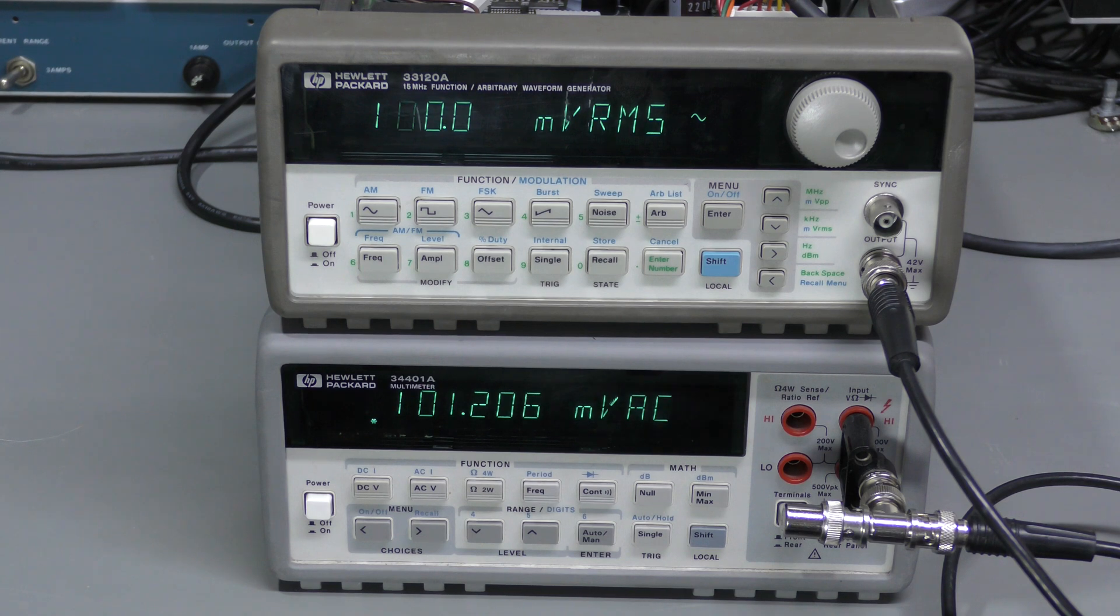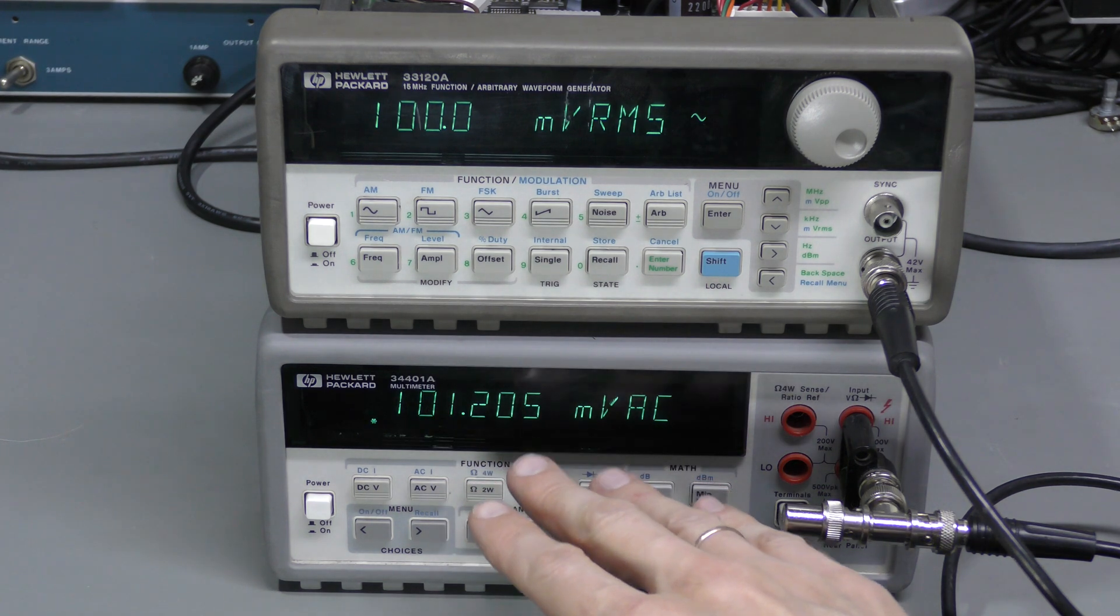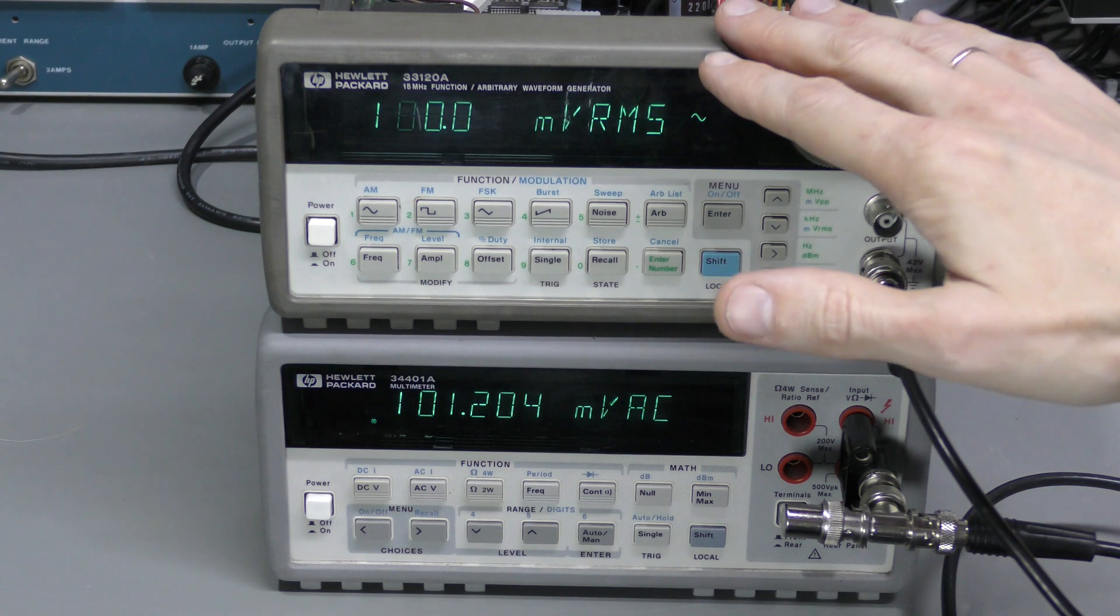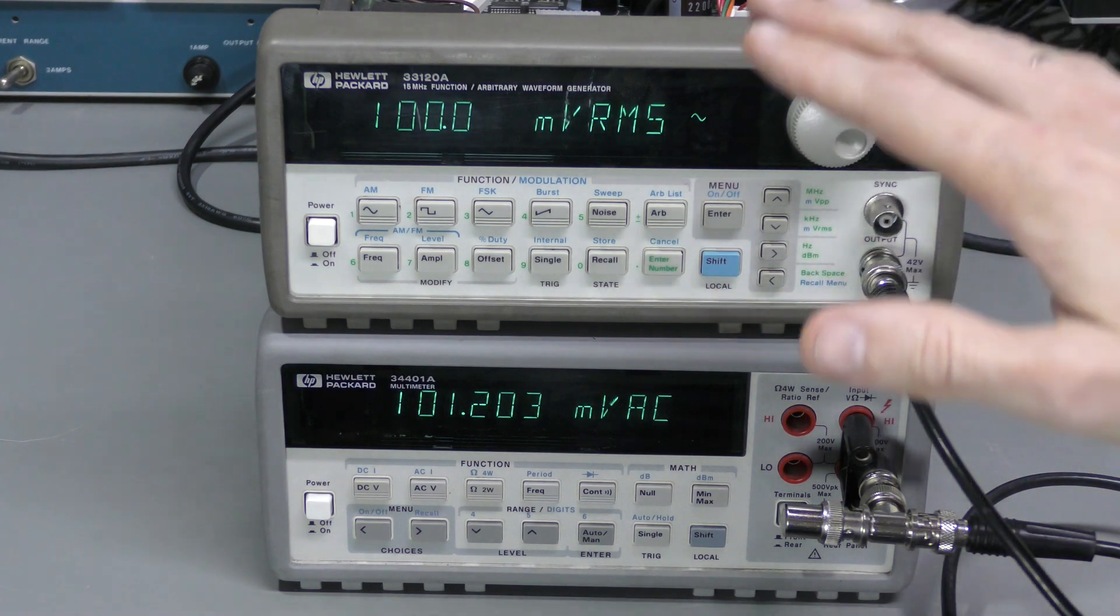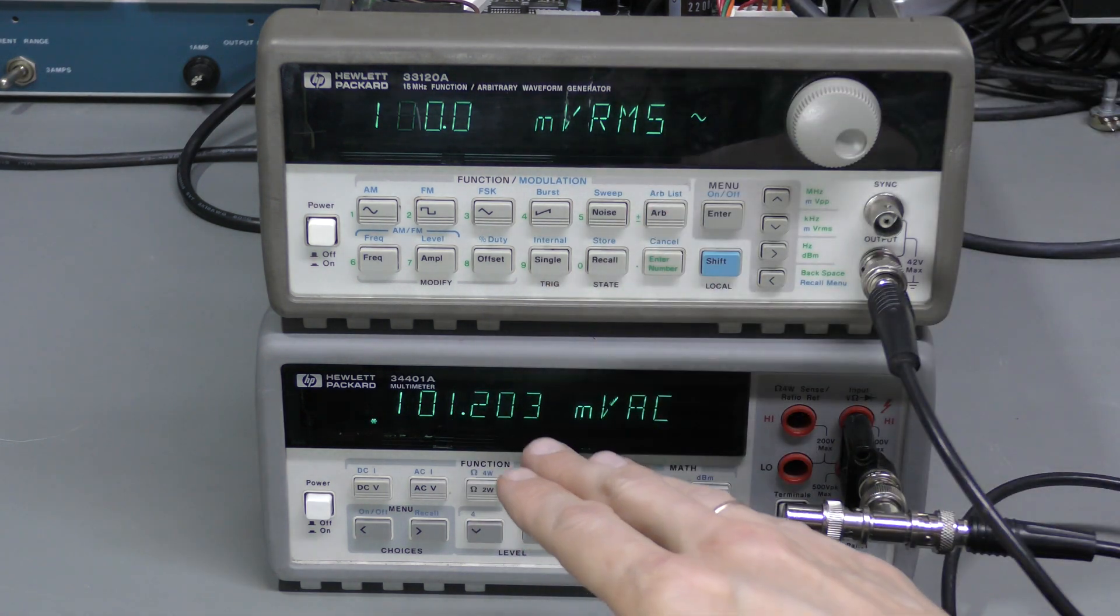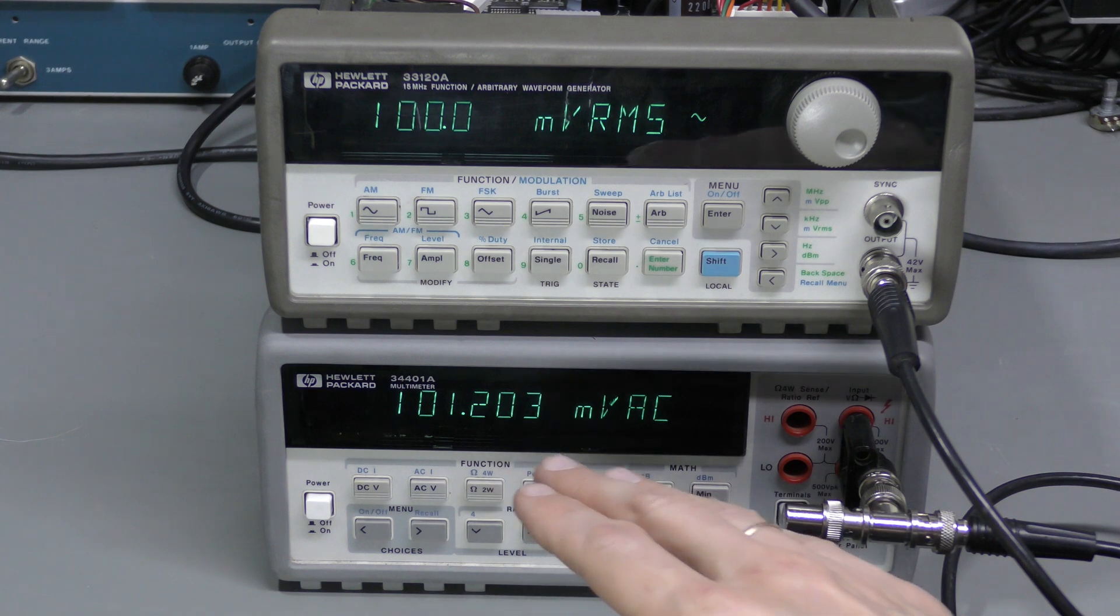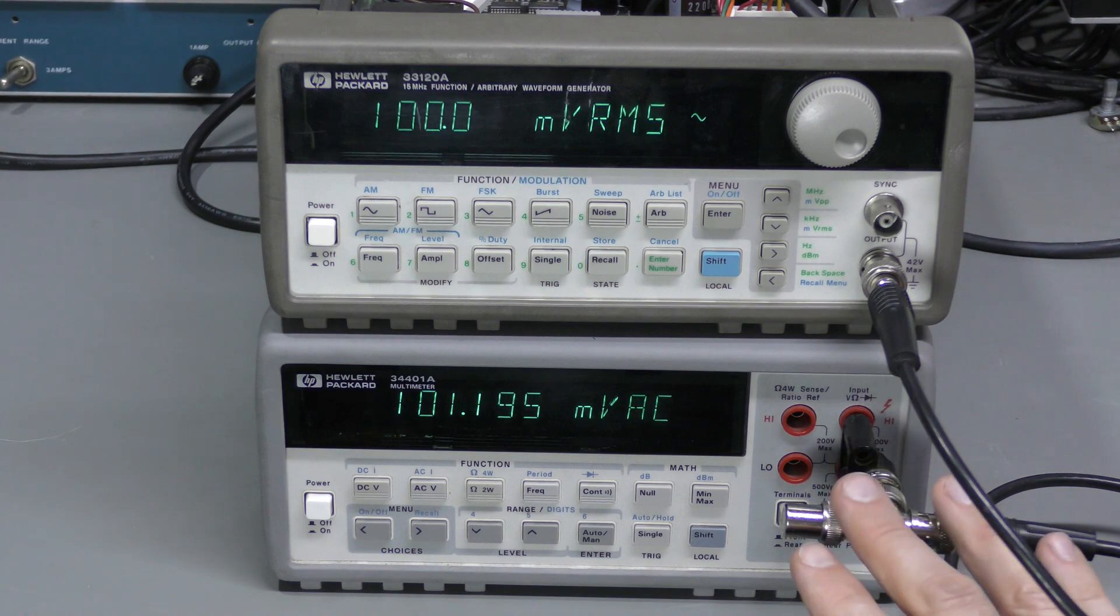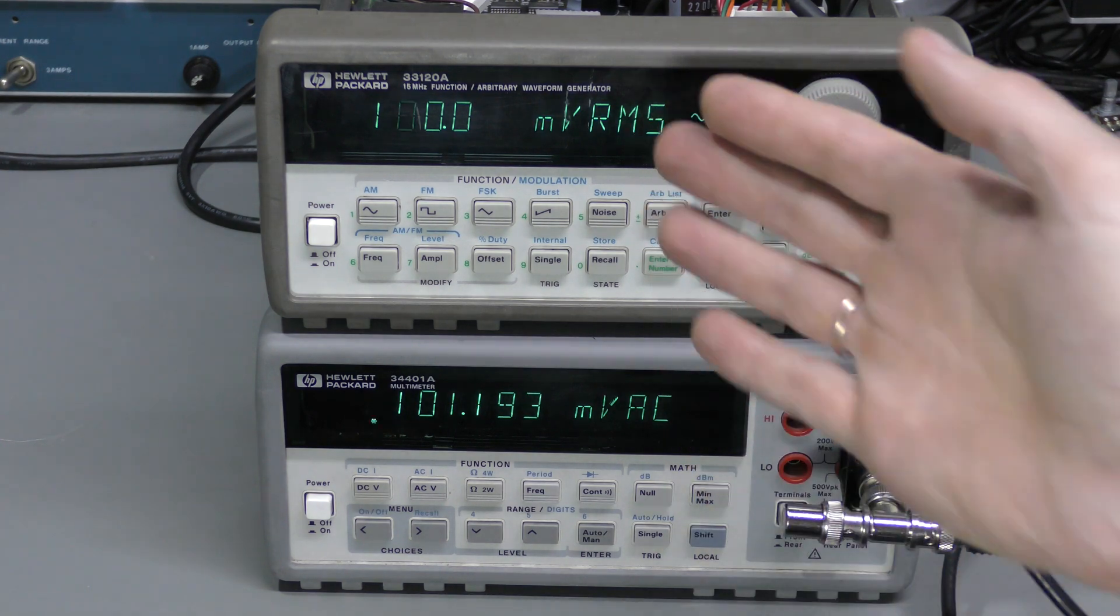It seems like I was right. I followed the calibration procedure in the service manual using this 6.5 digit multimeter. I did not record this, it's just a long and boring procedure. Nothing complicated, just follow the manual. The generator puts out particular amplitudes, and you're supposed to enter back what you read on the multimeter. Some steps are done with 50 ohm termination, and some steps with high Z.